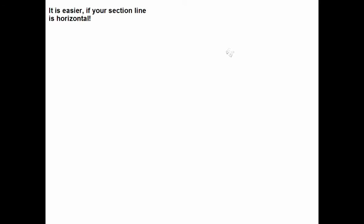Now it's easier if my section line is horizontal. So let's just move the map and turn it around. What's next?